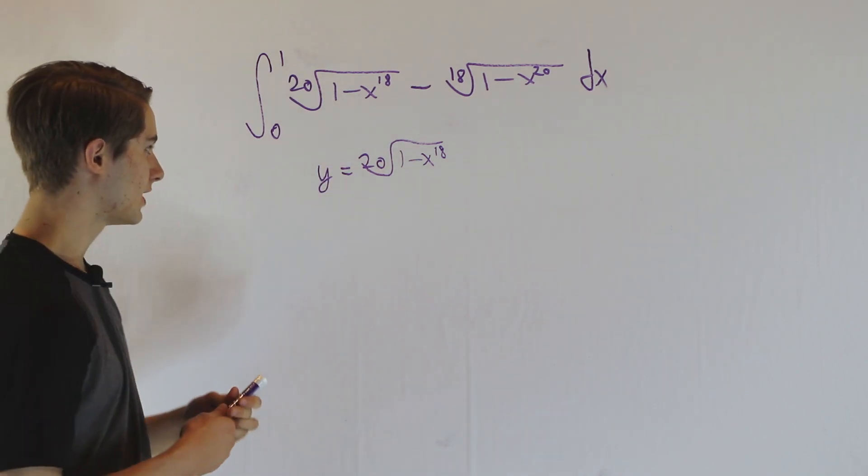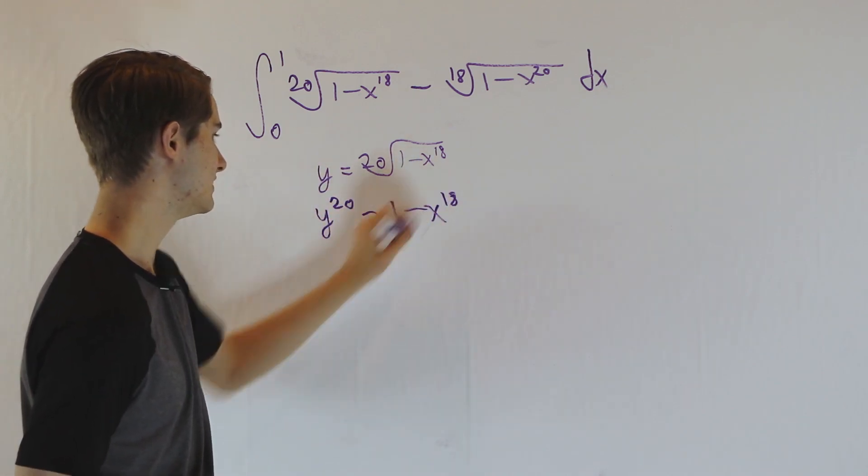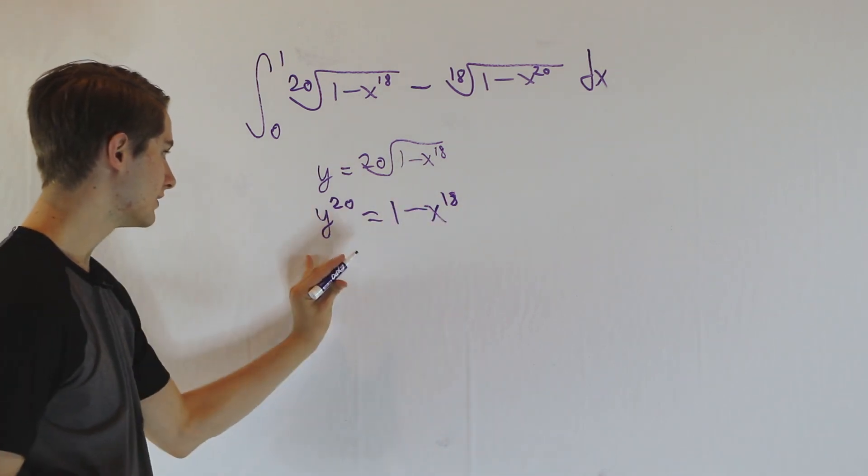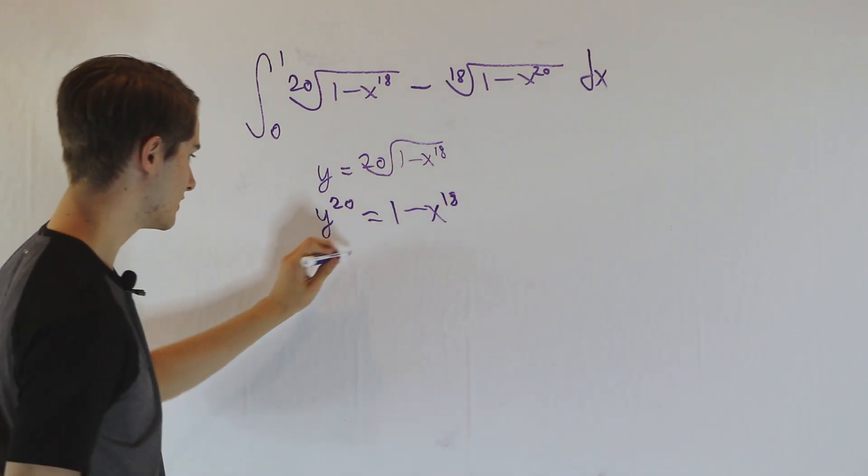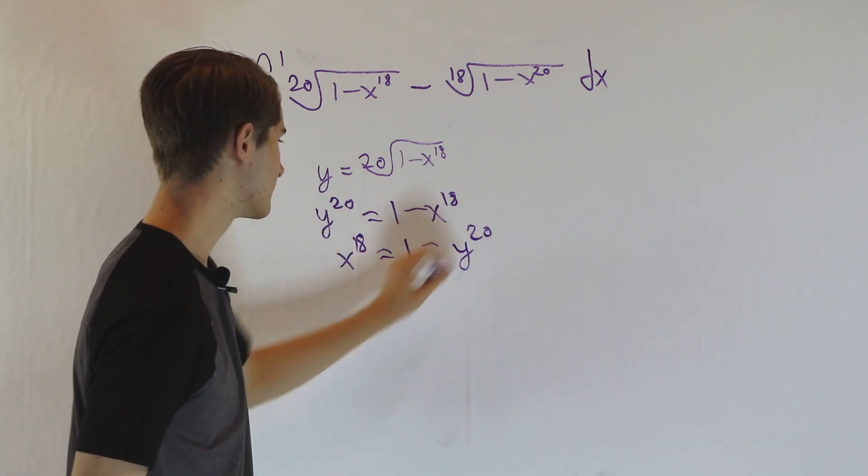If we take the 20th power on both sides, we get y to the 20th equals 1 minus x to the 18th. If we isolate x to the 18th by adding it over and subtracting y to the 20th, we get x to the 18th equals 1 minus y to the 20th.